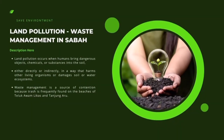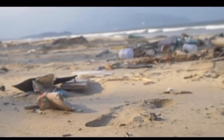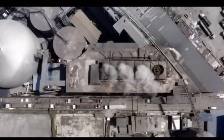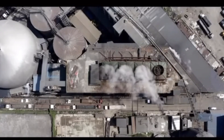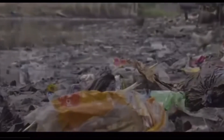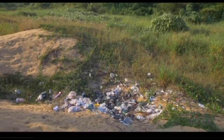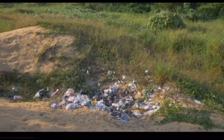Land pollution occurs when humans bring dangerous objects, chemicals, or substances to the soil either directly or indirectly in a way that harms other living organisms or damages the soil or water ecosystem. Furthermore, land pollution can severely disrupt agricultural activity, resulting in the wide radius of synthetic chemicals, fertilizer, and agrochemicals which contribute to pollution.